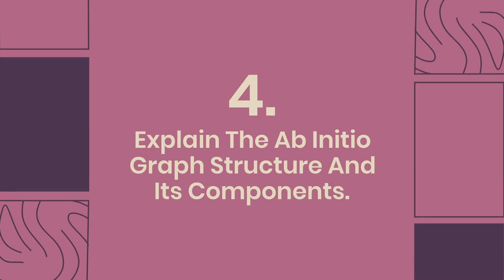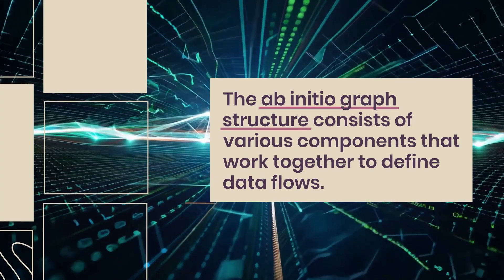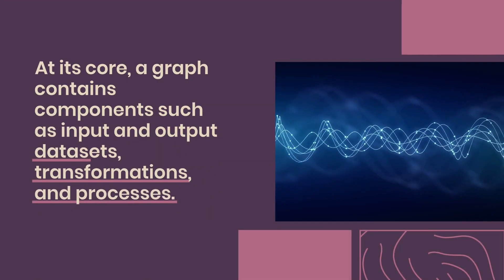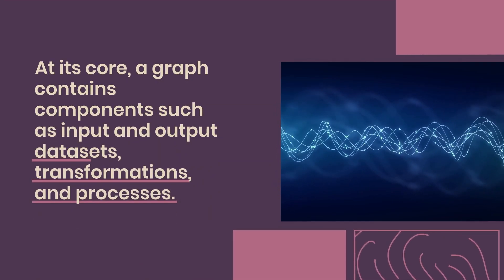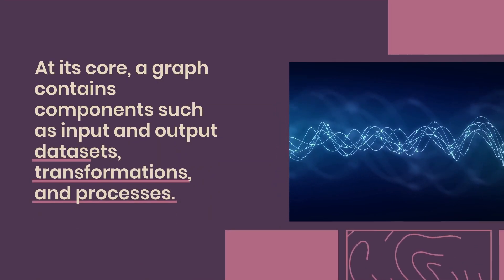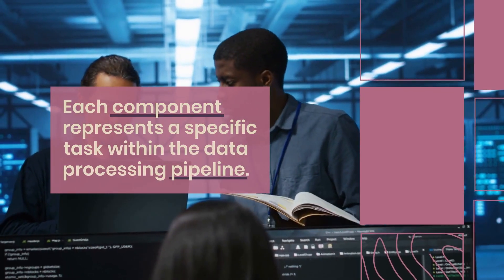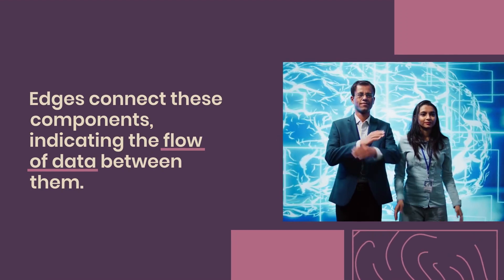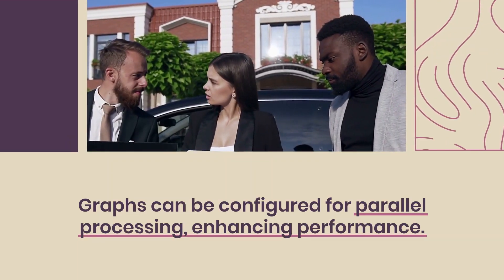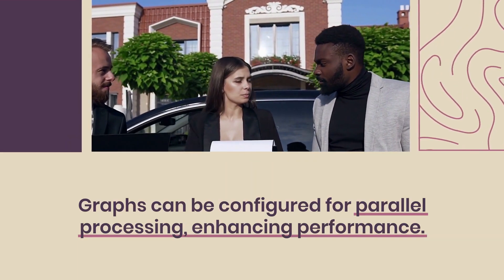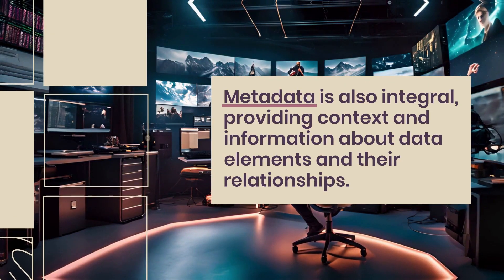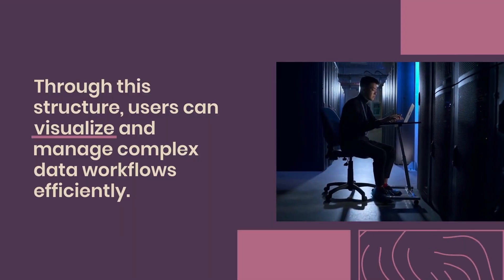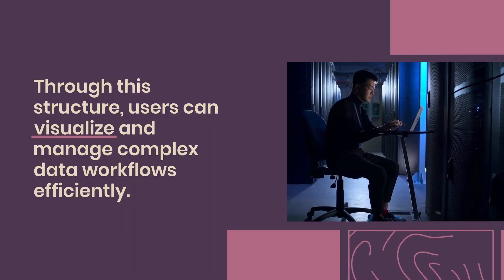Question 4: Explain the AbInitio graph structure and its components. The AbInitio graph structure consists of various components that work together to define data flows. At its core, a graph contains components such as input and output datasets, transformations, and processes. Each component represents a specific task within the data processing pipeline. Edges connect these components, indicating the flow of data between them. Graphs can be configured for parallel processing, enhancing performance. Metadata is also integral, providing context and information about data elements and their relationships, allowing users to visualize and manage complex data workflows efficiently.